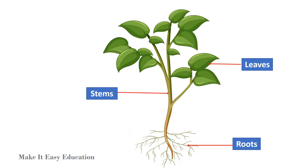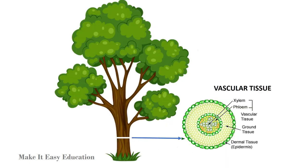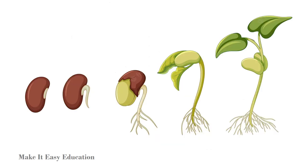Vascular plants have true stems, roots, and leaves. Since vascular tissues can transport water and nutrients for long distances, these plants can grow very tall to form tree-like structures.